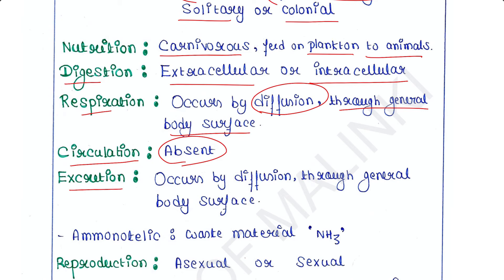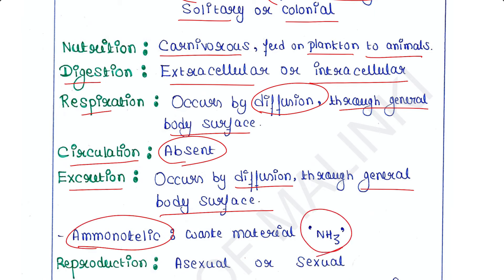Excretion: they do not have any proper excretory system in their body. Excretion occurs by diffusion through the general body surface. They are ammonotelic because the nitrogenous waste material excreted is ammonia.